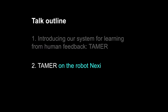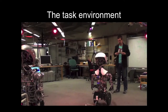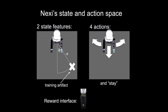I had an opportunity in the summer of 2011 to be in the MIT Media Lab and implement TAMER on the robot Nexi. The task environment is very simple — all that really matters is the training artifact and Nexi. The training artifact is picked up by the Vicon infrared camera system. From it we draw two bird's-eye-view state features: just the distance and the angle to the training artifact. Nexi's arms are out like a zombie just to make clear which direction is forward. There are four actions: turn left, turn right, move forward, and stay put.